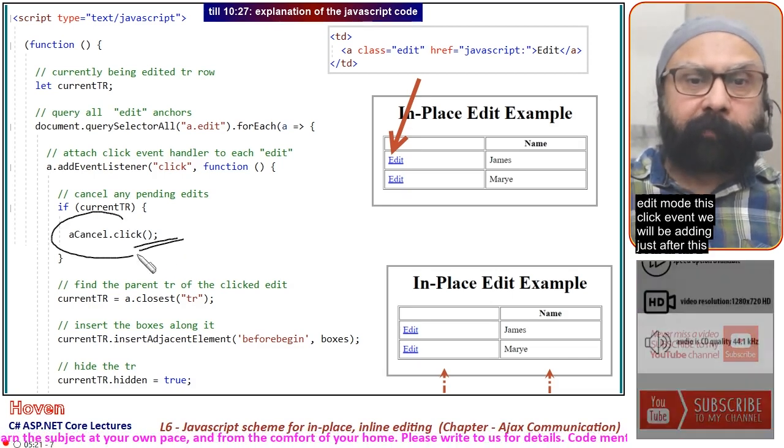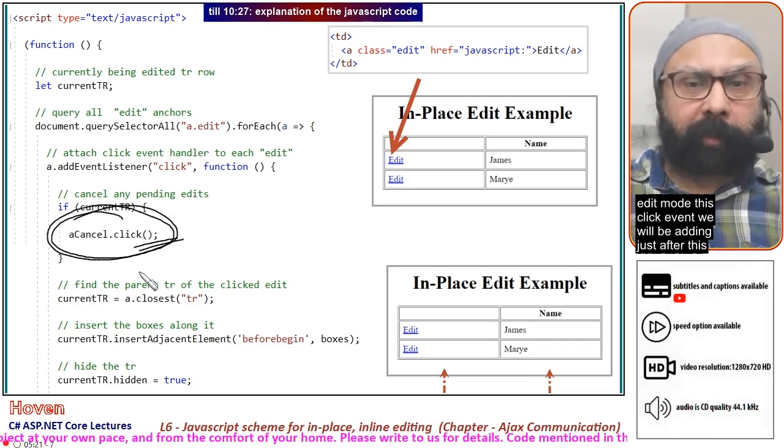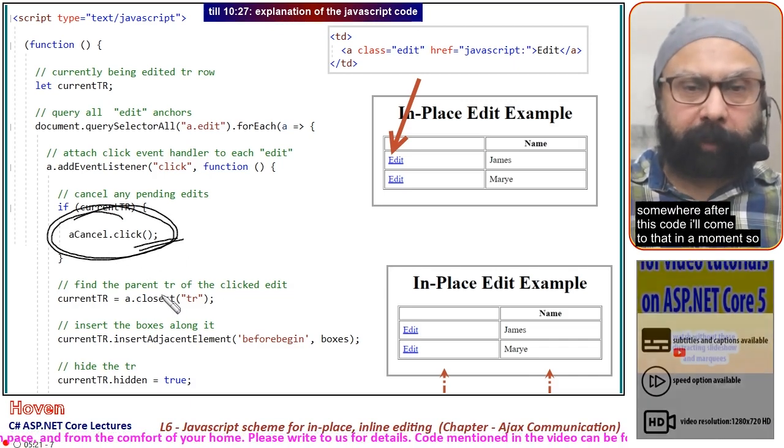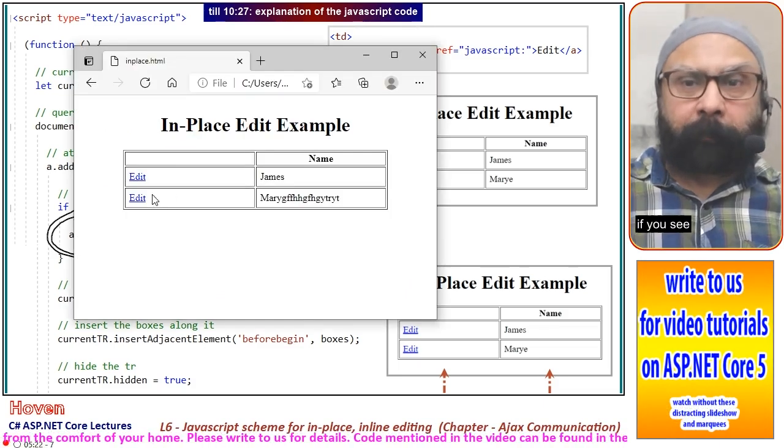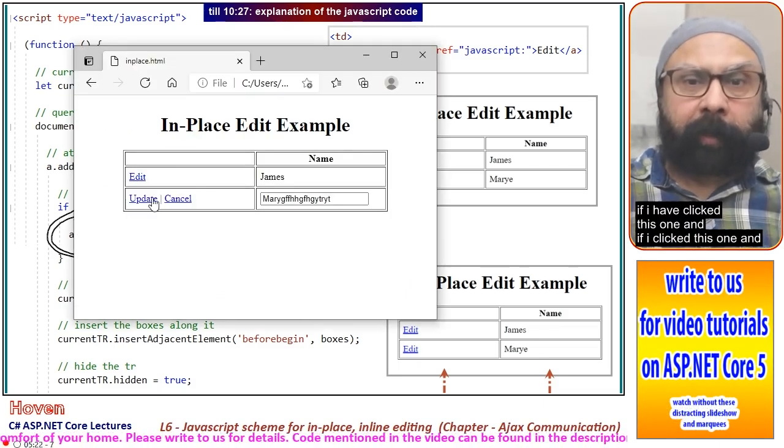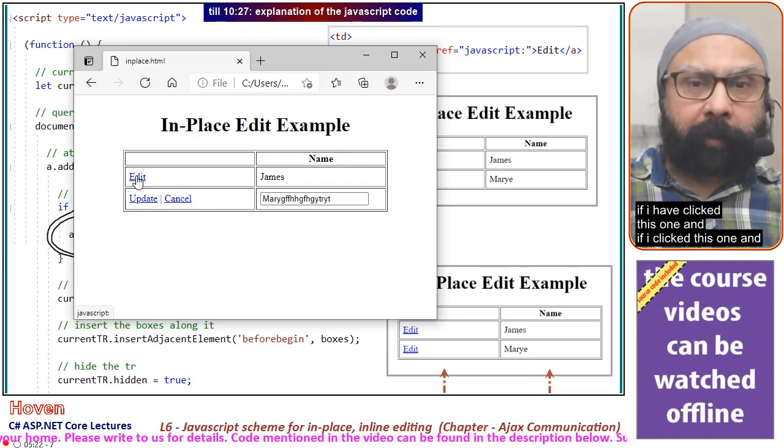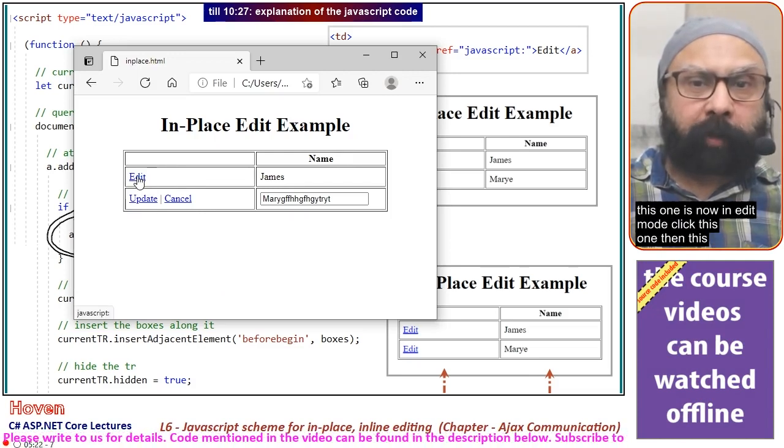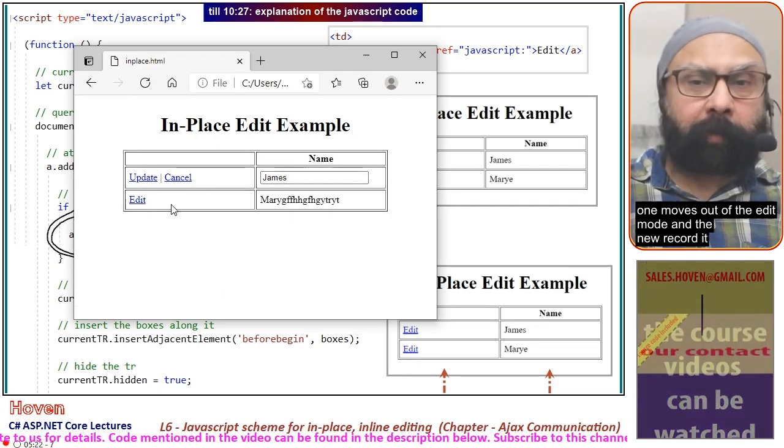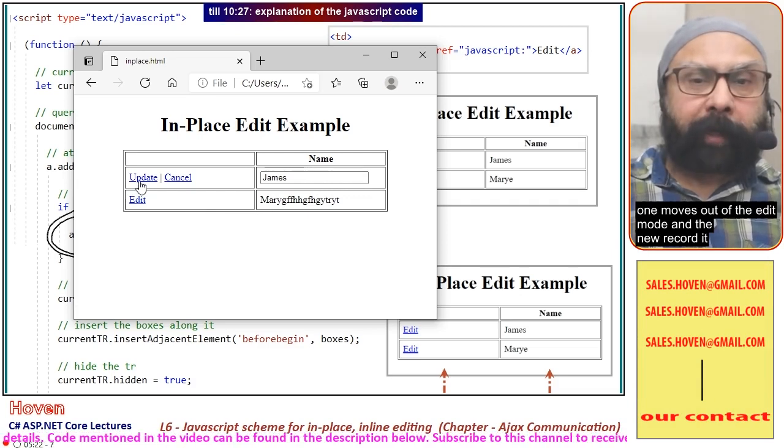This is the cancel button. It will cause the click event of the cancel button to fire so the currently edited record moves out of edit mode and the new record comes into edit mode.